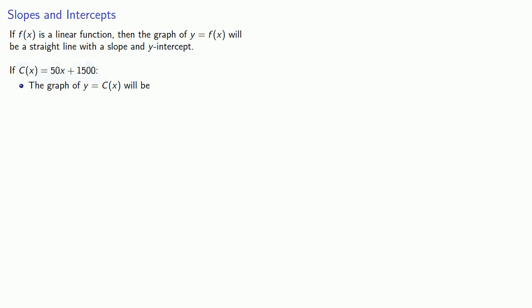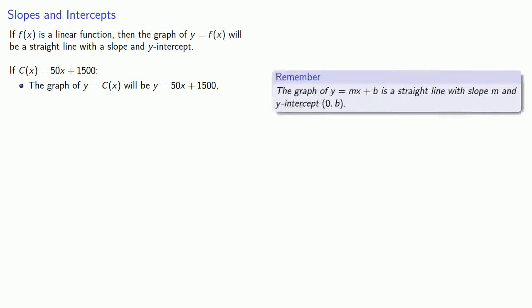c(x) is equal to 50x plus 1500. So every time we see c(x), we can replace it with 50x plus 1500. So here's a c(x), we'll replace it, and so we'll have y equals 50x plus 1500. And this is the equation of a straight line. It's useful to keep in mind the graph of y equals mx plus b is a straight line with slope m and y-intercept (0,b).